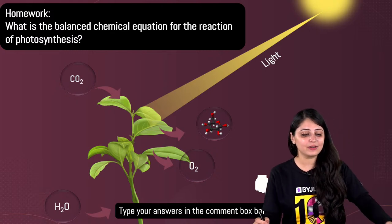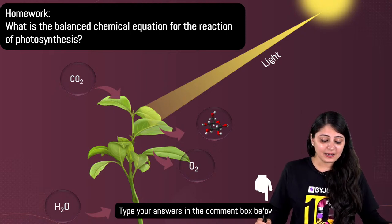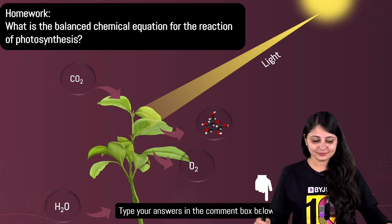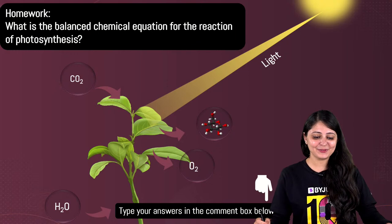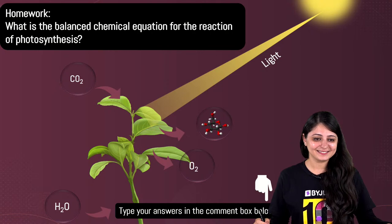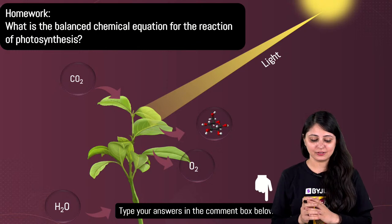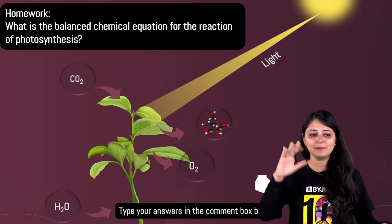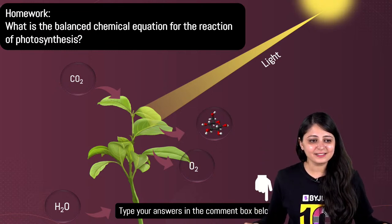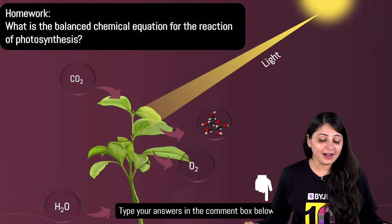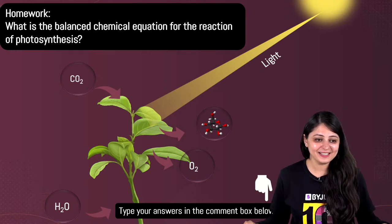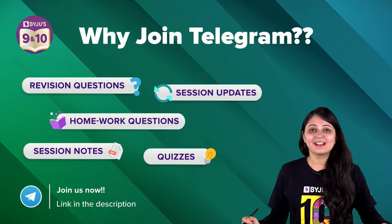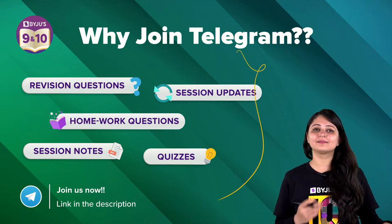Homework question as promised: what is the balanced chemical equation for the reaction of photosynthesis? You have carbon dioxide combining with water in the presence of sunlight and chlorophyll, giving you oxygen and glucose. Write the balanced chemical equation for photosynthesis. Type your answer in the comment section below once the live session gets over. Students who said they will do it: Muskaan, Alina, Nikita, Saksham, Lakshita, Yash, Mahamaya, Lavkush, Lakshit, Prince, Shashank, Karuna, Bhakti, Shankar, Ashwini.